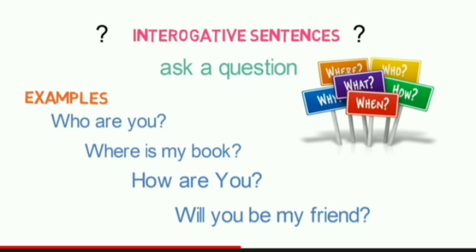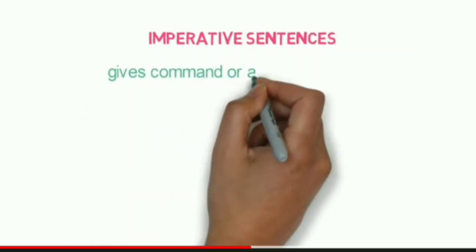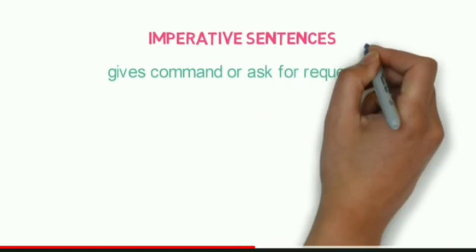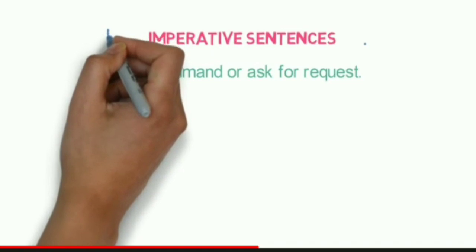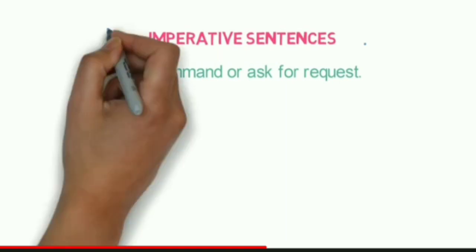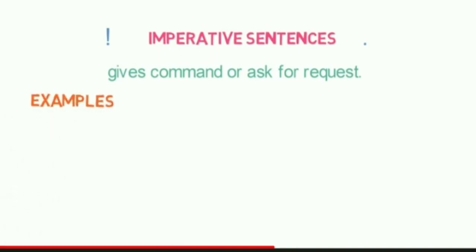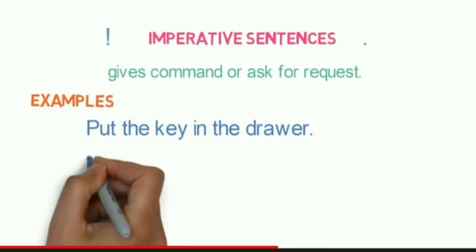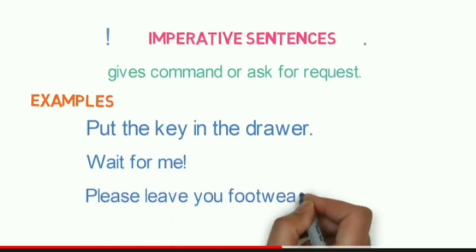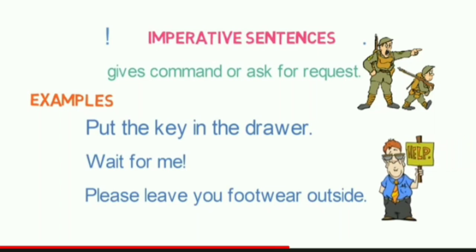An imperative sentence gives a command or asks for a request. They end with a period or an exclamation mark depending on how forcefully the sentence is spoken. If spoken more forcefully, an exclamation mark is used; otherwise a period is used. For example: 'Put the key in the drawer', 'Wait for me', 'Please leave your footwear outside.' Whenever you are giving a command or asking for help or a request, imperative sentences are used.